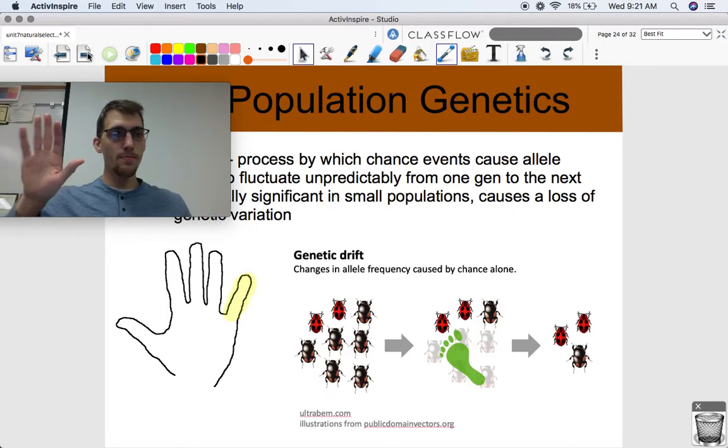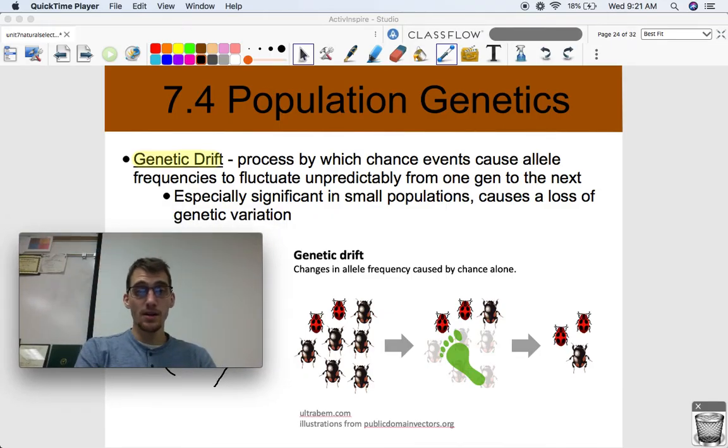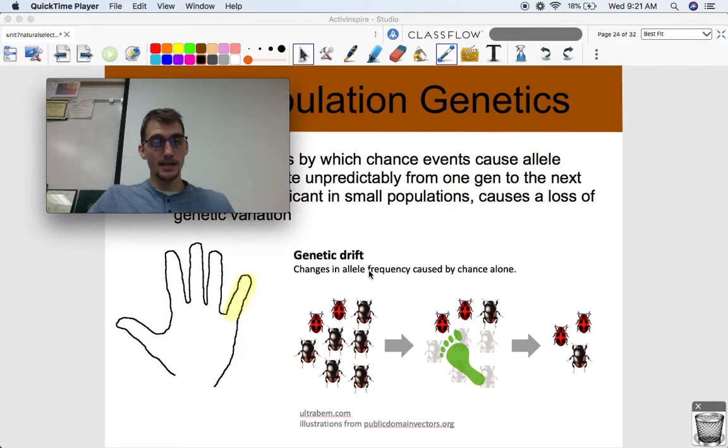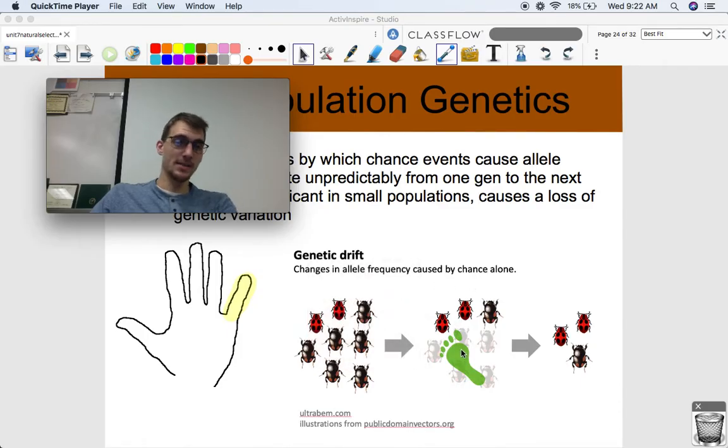We use our pinky to represent genetic drift. Genetic drift is the process by which chance events cause allele frequencies to fluctuate unpredictably from one generation to the next. Take a look at this picture over here, we got beetles - a lot of them are black with a black shell, and some of them are these red spotted ones. But let's just say some kind of chance event happens, and a good portion of them are wiped out. Take a look at our allele frequencies now. It has definitely changed from one generation to the next, and that's microevolution.